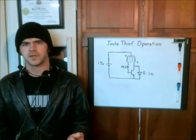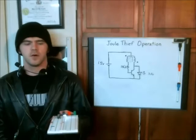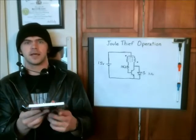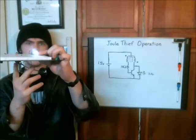You may have heard of a Joule Thief circuit. What it does is it takes a 1.5 volt battery, a AA battery, and converts that voltage into a 3 volt potential so you can power a white LED.